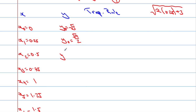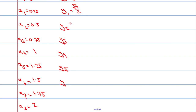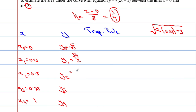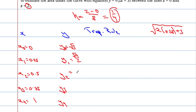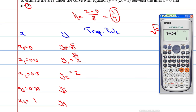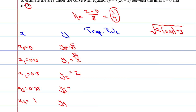Substituting each x into y = √(2x + 3): y₀ = √3, y₁ = √(14)/2, y₂ = 2, y₃ = 3√2/2. You might want to pause the video, take your calculator out, and fill in the remaining values. After completing the table, we return to the trapezium rule to apply it.